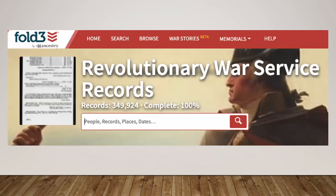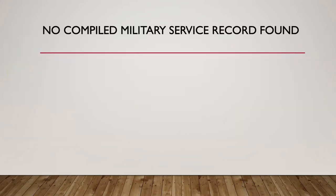We know what his service is, so we want to look for a compiled military service record. Recognize that I'm looking for the compiled military service record after I've looked at the pension — because if you look at the compiled military service first, you won't know you've got the right person. However, there's no compiled military service record to be found for John Head. Most militia units are like that; there are very few militia records. Just because he doesn't have a compiled military service record doesn't mean he didn't serve — he has a pension. It's possible to have no compiled military service record and have a pension, and vice versa.